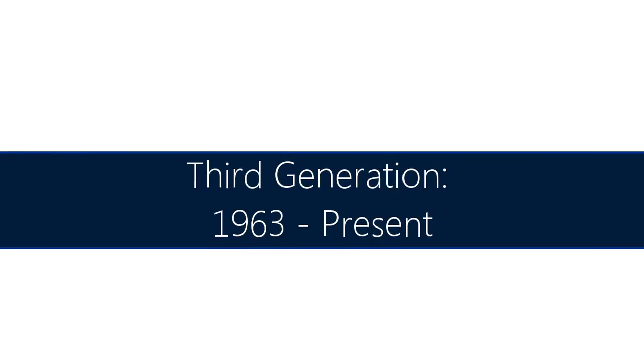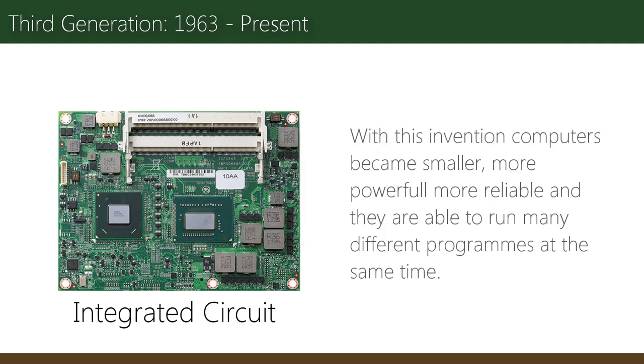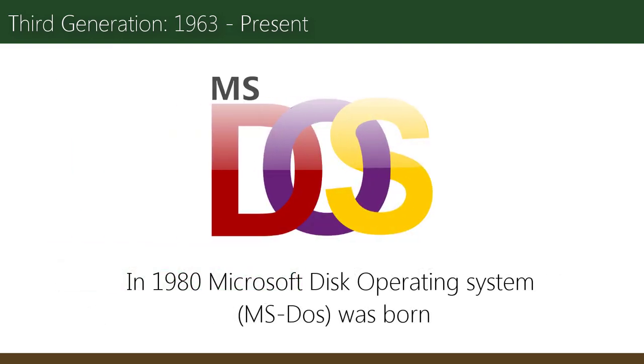The invention of the integrated circuit brought us the third generation of computers, with a smaller form factor. With this invention, computers became smaller, more powerful, and more reliable, and were able to run many different programs at the same time. In 1980, Microsoft Disk Operating System, the famous MS-DOS, was born.